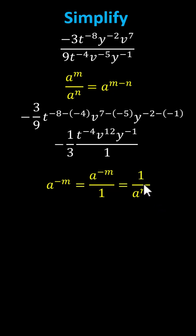This indicates if we move t to the power of negative four and y to the power of negative one to the denominator, the sign of the exponent will change, which gives us our final simplified expression: negative v to the power of twelve divided by three t to the fourth y.